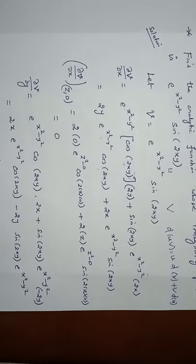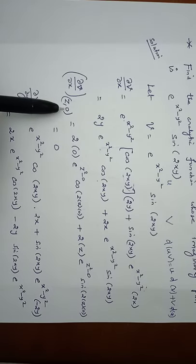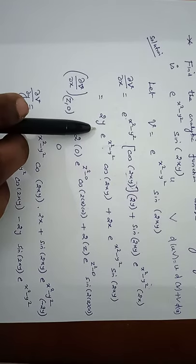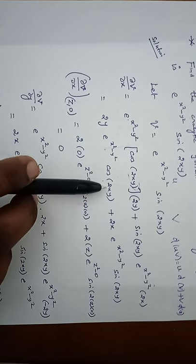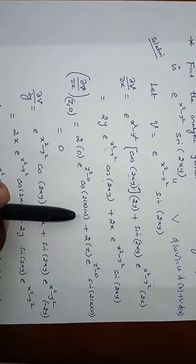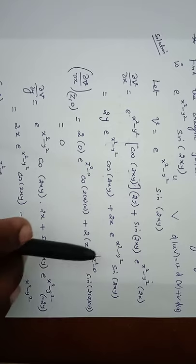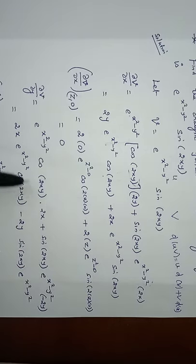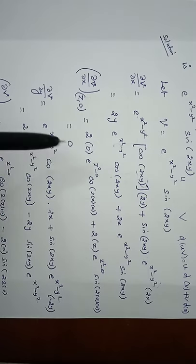Now we apply x = z, y = 0 to ∂v/∂x. Substituting: 2·(0)·e^(z²)·cos(2z·0) + 2z·e^(z²)·sin(2z·0). Since y = 0, the first term is 0, and sin(0) = 0 so the second term is also 0. Therefore ∂v/∂x at (z, 0) = 0.